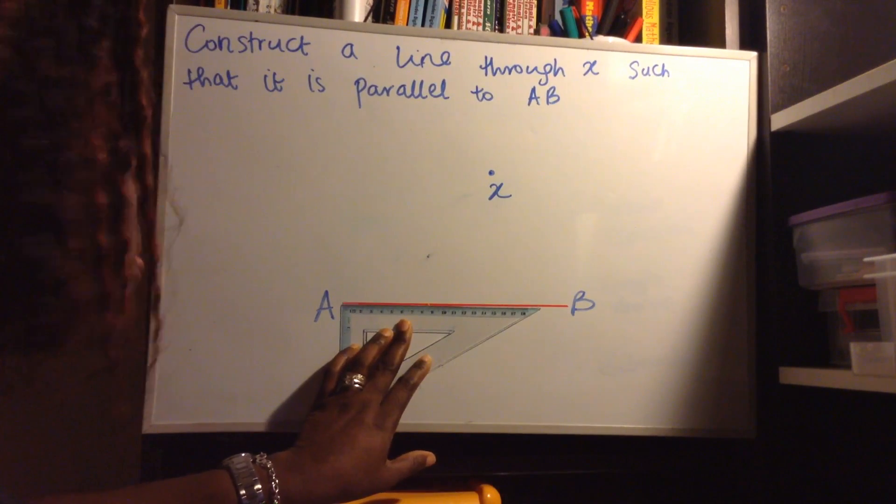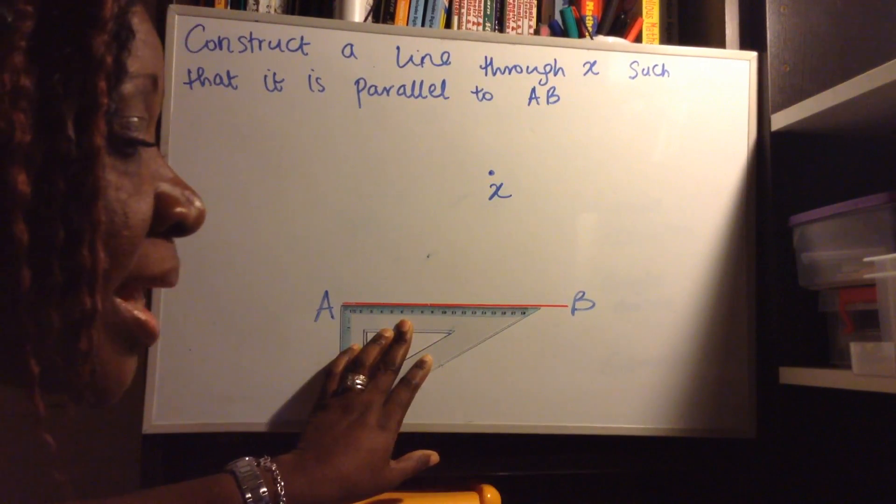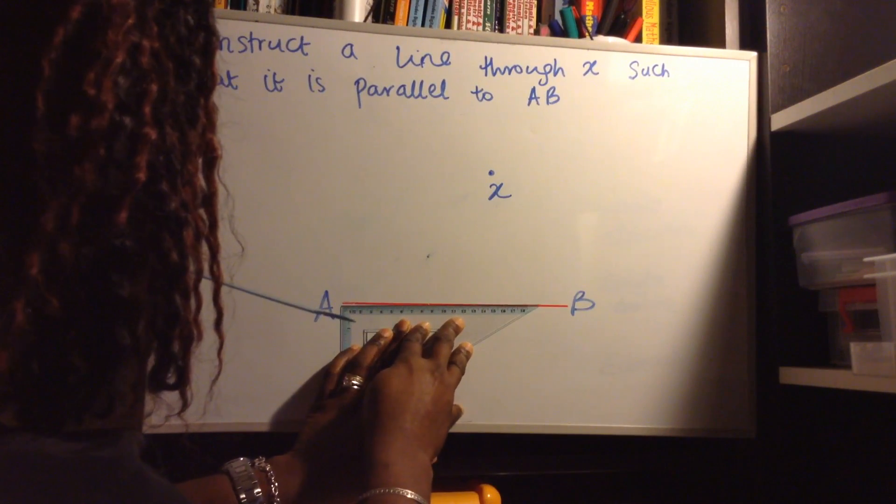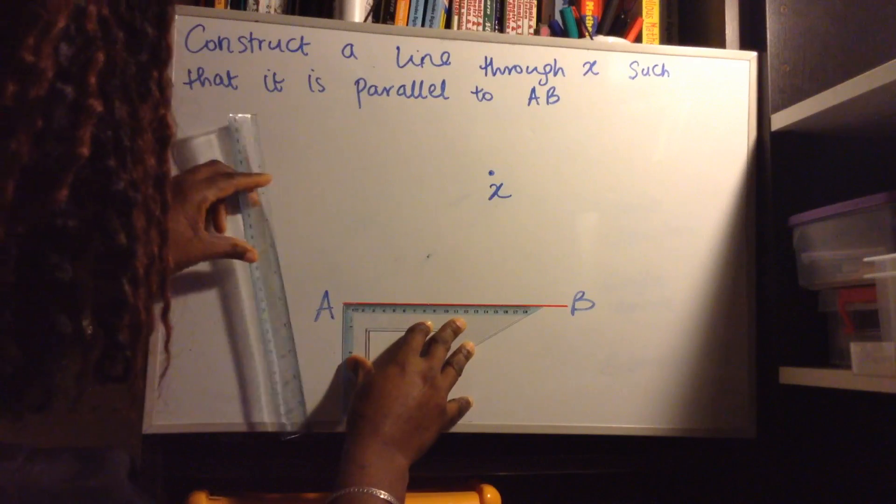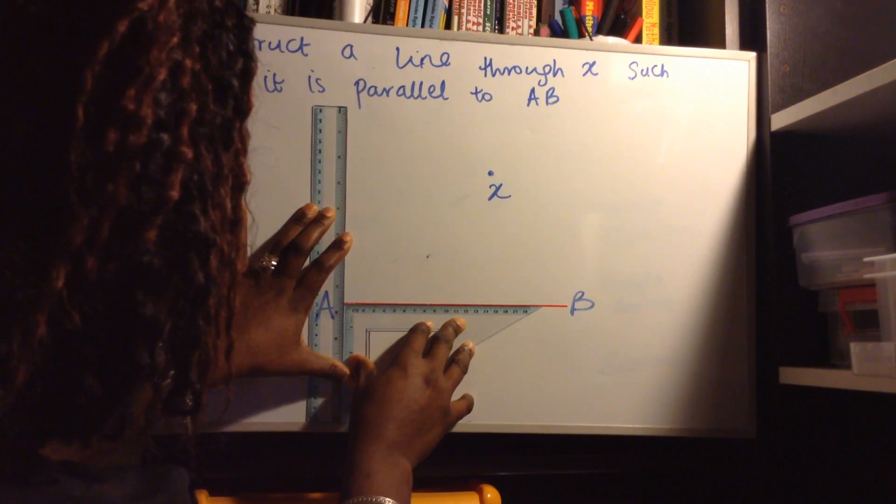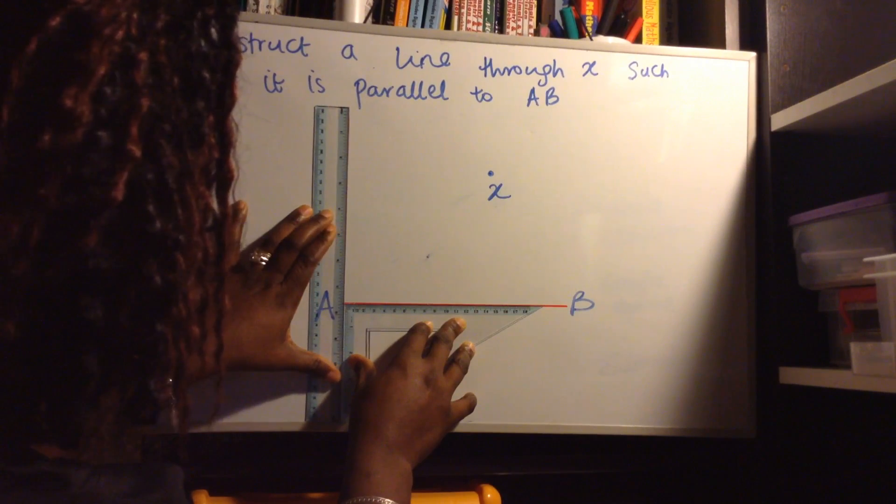And then, once we got that in place, we can then put our ruler on the other end. Okay, it is all in place now.